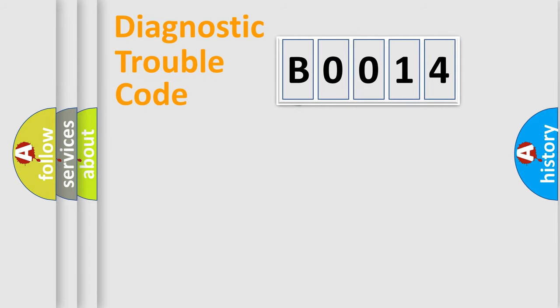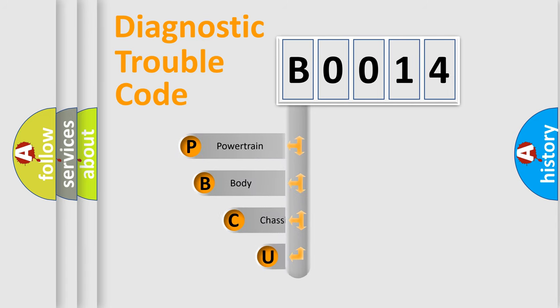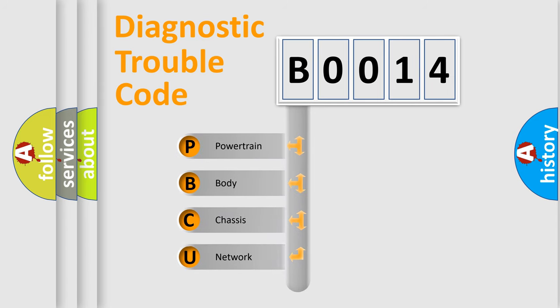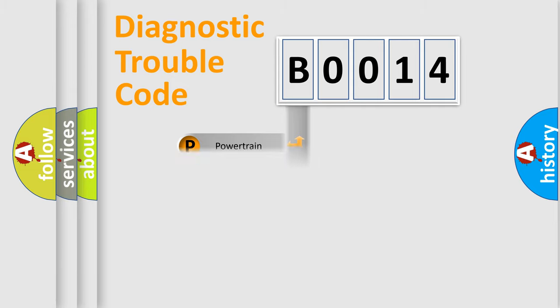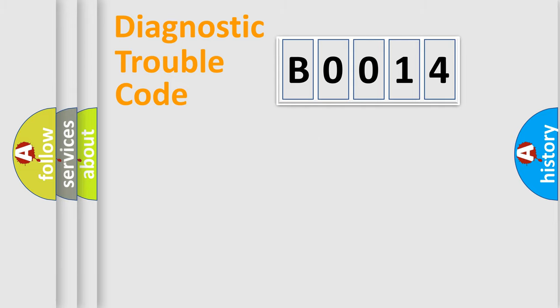First, let's look at the history of diagnostic fault code composition according to the OBD2 protocol, which is unified for all automakers since 2000. We divide the electric system of the automobile into four basic units: Powertrain, Body, Chassis, and Network. This distribution is defined in the first character of the code.